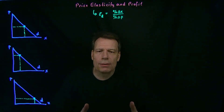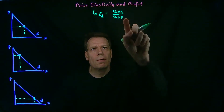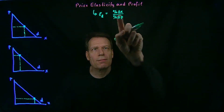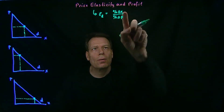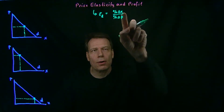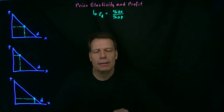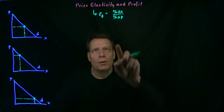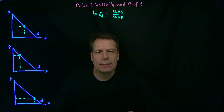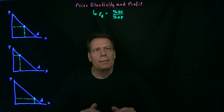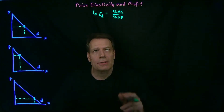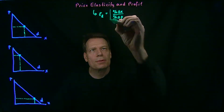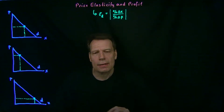Now, since demand curves are downward sloping, whenever price increases we have a positive number at the bottom of this fraction, quantity is going to fall, and so we'll have a negative number at the top. So this definition of price elasticity implies that we'll get a negative number. But we don't really want to keep track of negative signs, so we're going to take the absolute value of this and get rid of the negative sign.